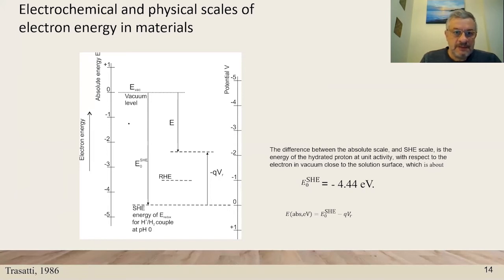We have seen the energy scale for electronic quantities in materials with respect to the vacuum level and we can tabulate all the work functions, but in electrochemistry there is a different reference and the reference is actually a reaction, the reduction of hydrogen on the platinum electrode.